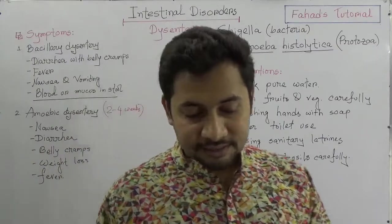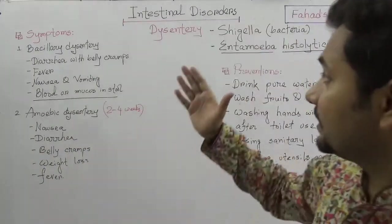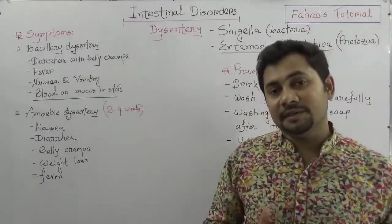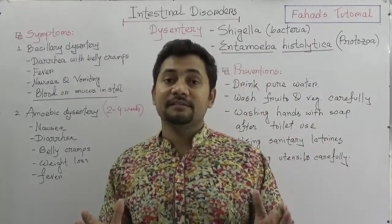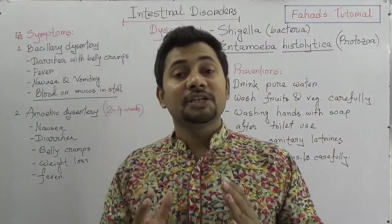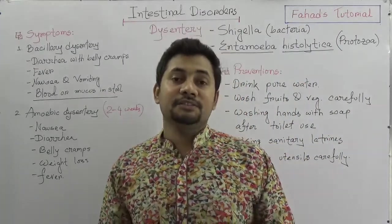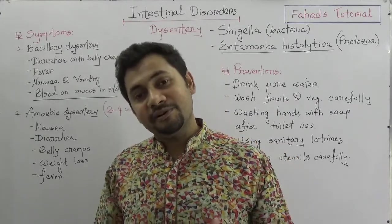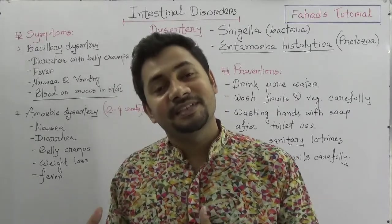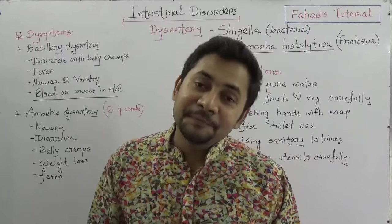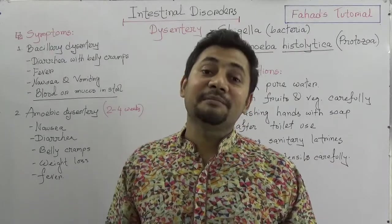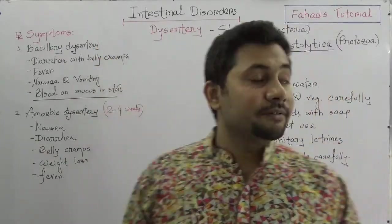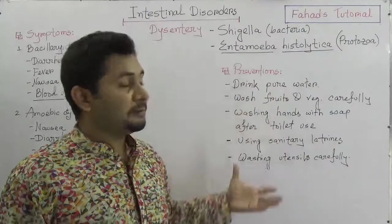To summarize what we have covered about Dysentery: it is caused by bacteria and protozoa. The bacteria's name is Shigella, and the resulting disease is known as Shigellosis. The protozoa is Entamoeba histolytica, and the resulting disease is Amoebic Dysentery. We have covered the symptoms and the preventions.